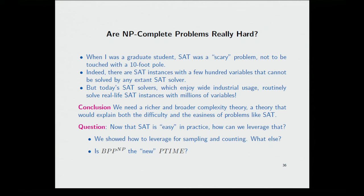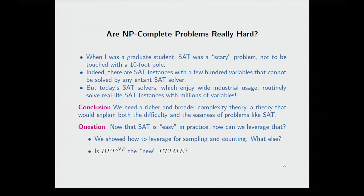Or we could prove that P is different than NP, but all of NP may be included in n to the log log log n. And this is maybe even as good as any polynomial. And so there's no guarantee that solving P versus NP will yield any practical benefits. Now, when I was a graduate student, SAT was considered a scary problem. You look at it like this. You approach it like a bomb. You look at it very carefully. You approach it after you've worn a vest. And SAT, I'm not trying to say that SAT is an easy problem because we know how to generate very difficult SAT instances. We can generate SAT instances with a few hundred variables that no solver can solve. But nevertheless, there's something magical about the problems that come up in real life that nobody understands why, but we're able to solve huge problems. And just explaining it, I think, is a wonderful challenge. How can we explain why some problems in SAT are so easy and why some are so hard? And, but on the other side, this is for the theory. How can we leverage the fact that in real life, many SAT instances seem to be very easy? What else can we do with it? Should we think of BPP to the NP as the new P time? Thank you very much.